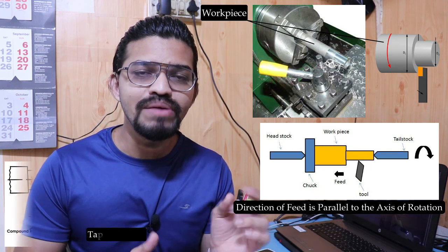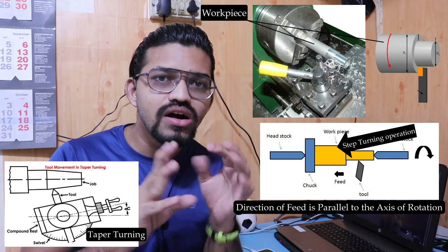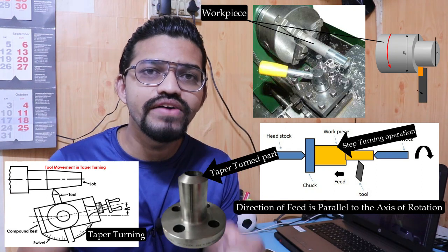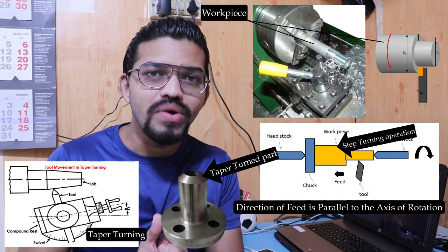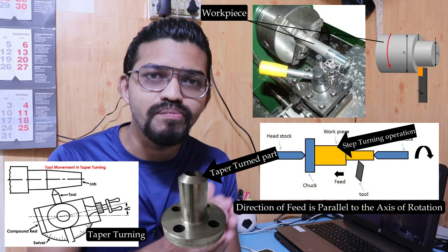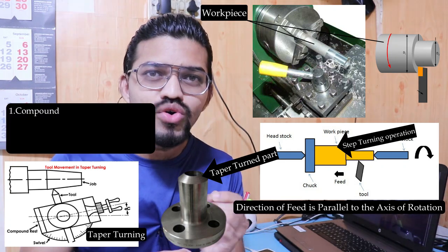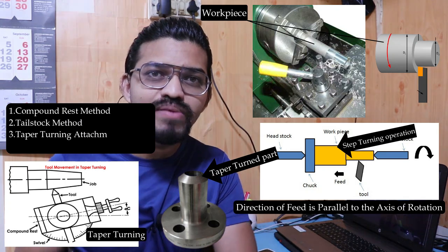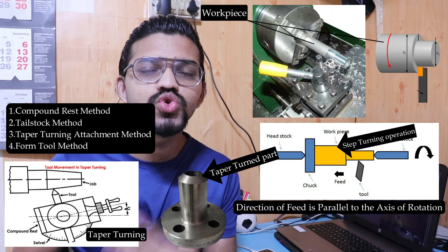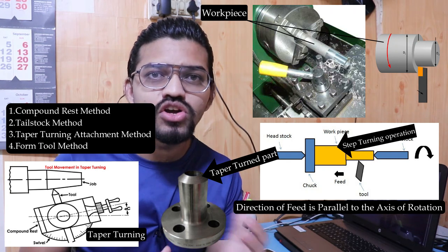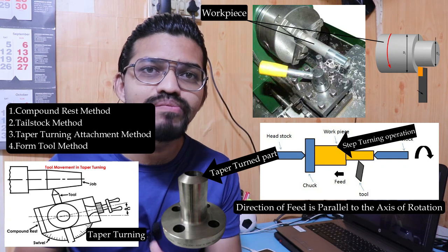There are two types of turning: taper turning and straight/shoulder turning. In taper turning, we convert a cylindrical job into a conical one by giving an angle of taper. There are four distinct methods to carry out taper turning: the compound rest method, tailstock method, taper turning attachment method, and form tool method. These four methods will be covered in detail in a separate video.